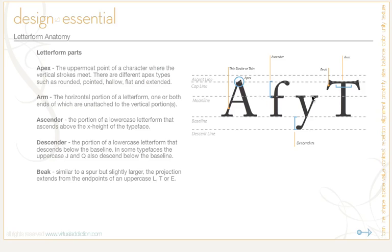The arm is the horizontal portion of a letterform, one or both ends of which are unattached to the vertical portions. The ascender is a portion of a lowercase letterform that ascends above the X-height of the typeface — so this portion of the F is the ascender. The descender is the portion of the lowercase letterform that descends below the baseline. In some typefaces, the uppercase J and uppercase Q also descend below the baseline.